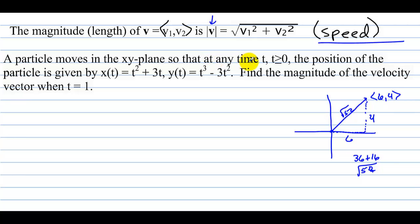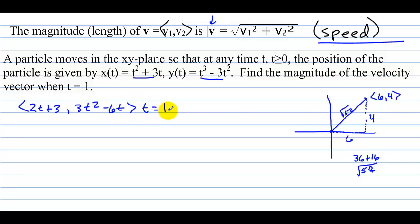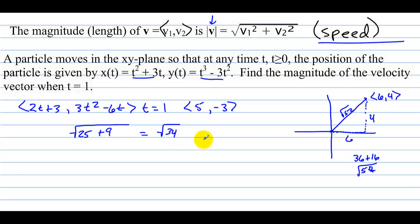A particle moves in the xy plane so that at any time t ≥ 0 the position is given parametrically. Find the magnitude of the velocity vector when t equals 1. The velocity vector is ⟨2t + 3, 3t² − 6t⟩. At t = 1: 2 + 3 = 5 and 3 − 6 = −3, giving velocity vector ⟨5, −3⟩. The magnitude is the square root of 25 + 9 = square root of 34. That is a scalar answer representing the length of the velocity vector at t = 1.